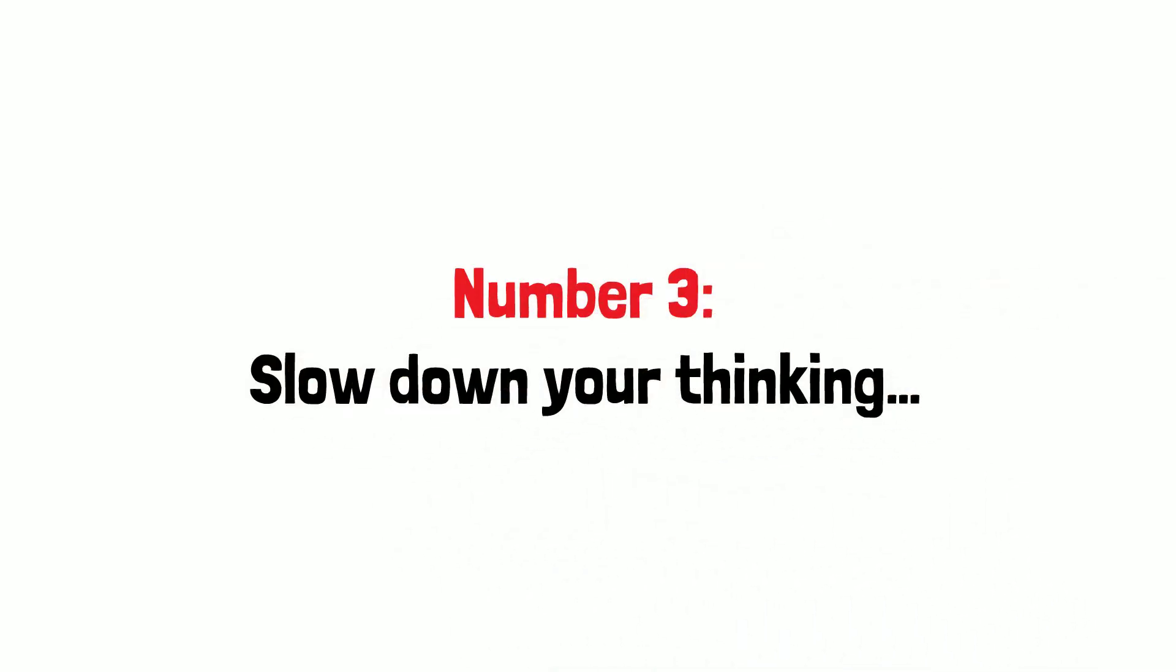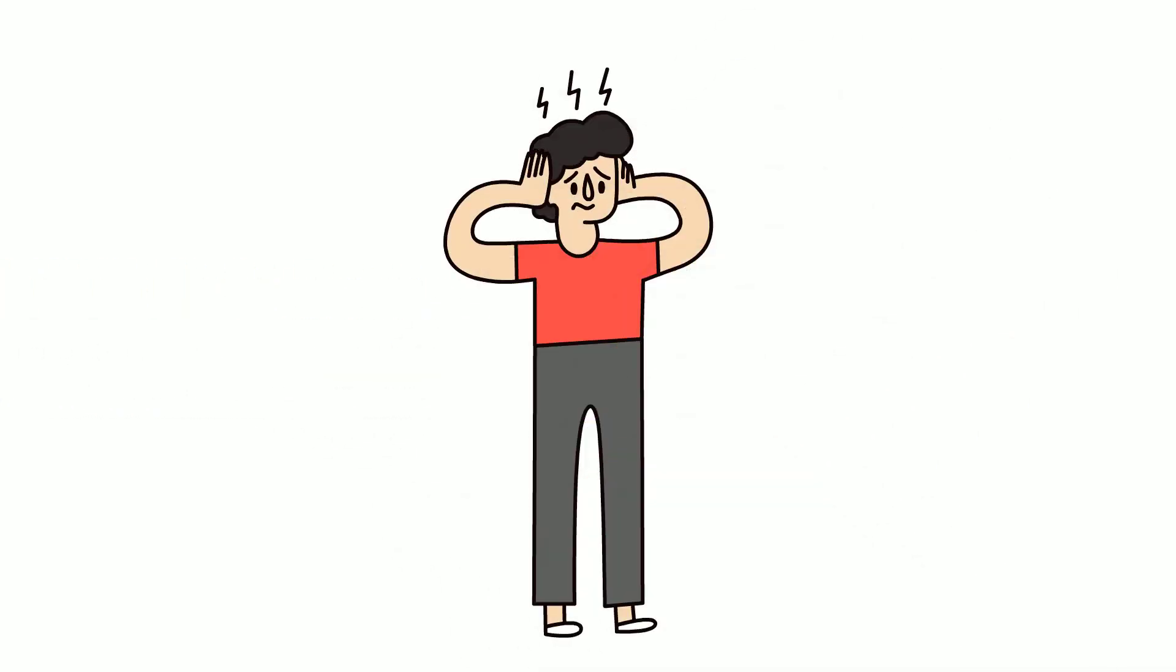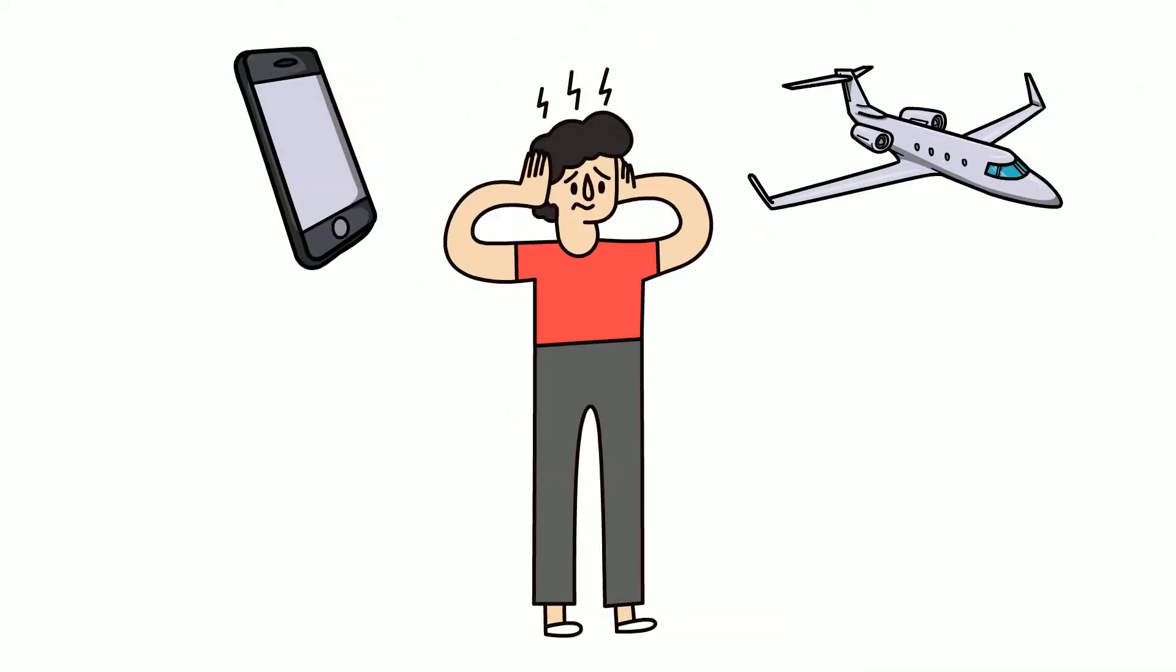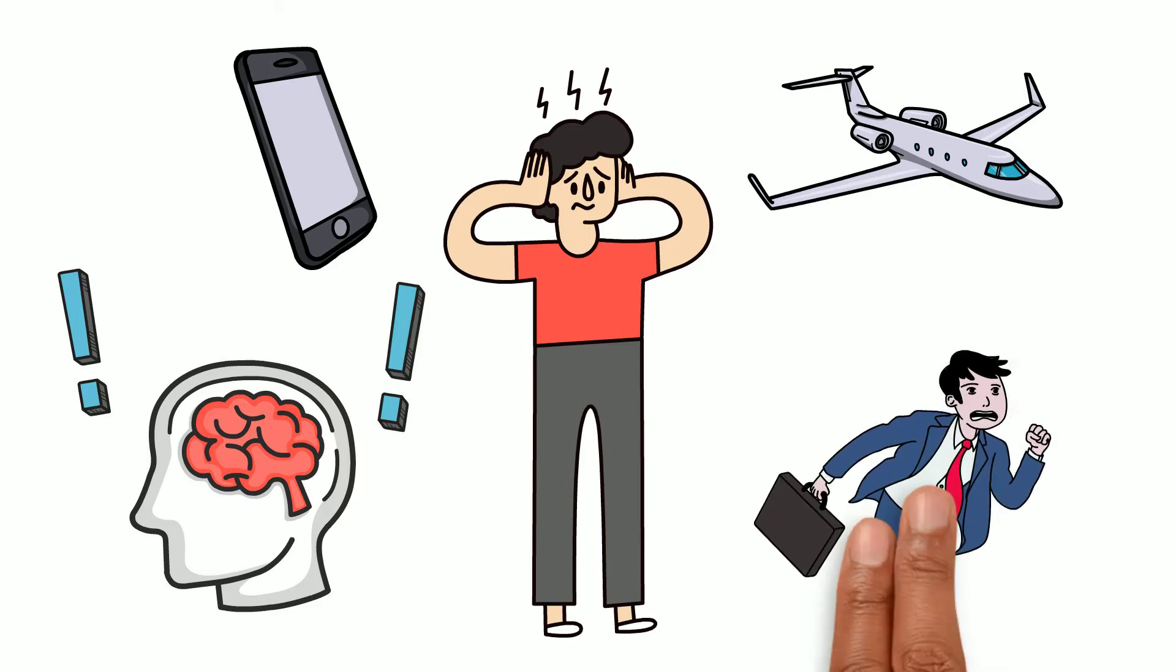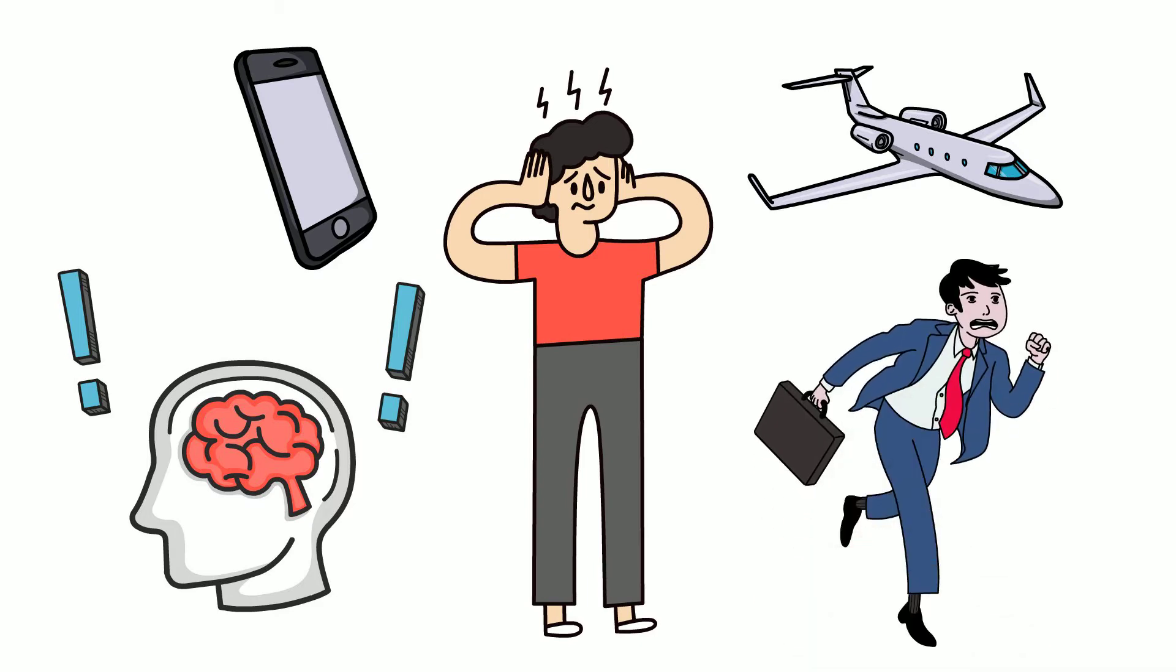Number three: slow down your thinking. Distractions are all around us. We live in a busy world, where a thousand things are taking place in our peripheral vision all at once. Our brains are acclimatized to this constant throng of activity, and our thoughts move in tandem with the hustle and bustle of everyday life.